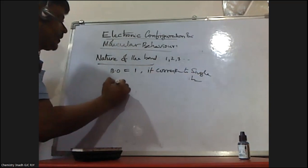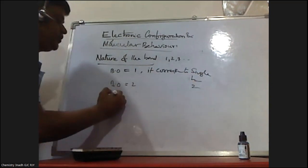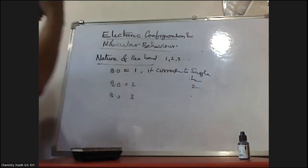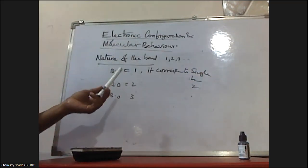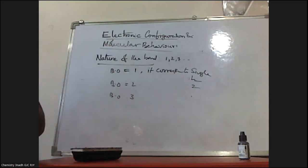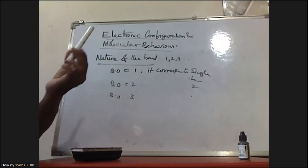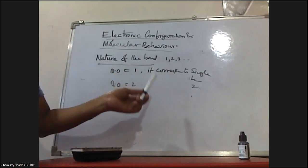If bond order is 1, it corresponds to a single bond. If bond order is 2, it corresponds to a double bond. If bond order is 3, the number of bonds present between two atoms is 3, corresponding to a triple bond. So, integral bond order values of 1, 2, 3 correspond to single bond, double bond, triple bond respectively.